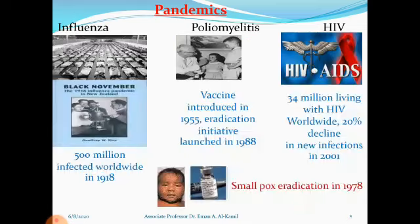There are a large number of epidemics that have occurred globally. For example, influenza — the first major epidemic — was in 1918. It started in Spain and infected 500 million people worldwide, causing widespread mortality.